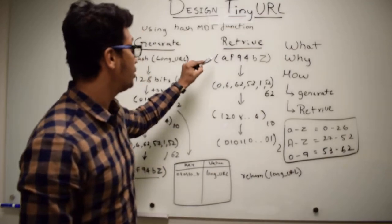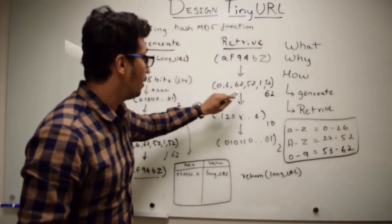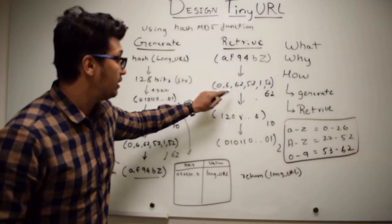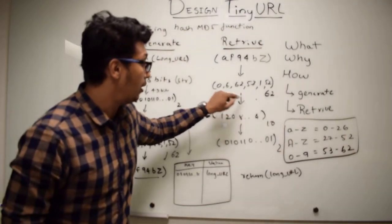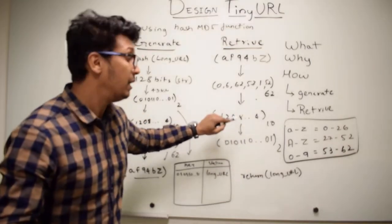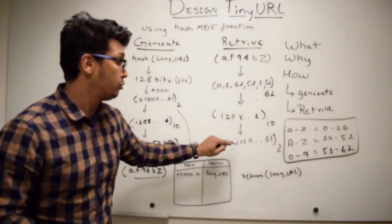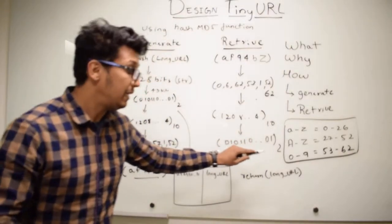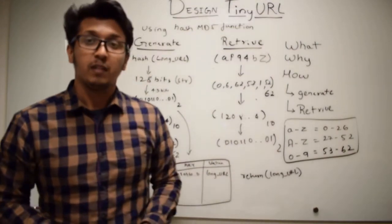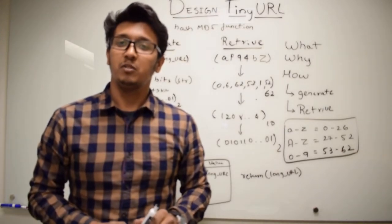For the retrieve function, we take the alphanumeric value and convert it back to a base 62 value using the same mapping table. After this, we convert the whole value to a base 10 number, which is a trillion-range number. From this base 10 number, we convert it into its binary representation, and then fetch the corresponding value from the database and return the long URL to the user.